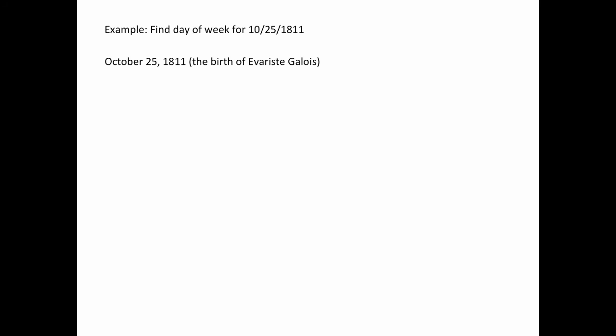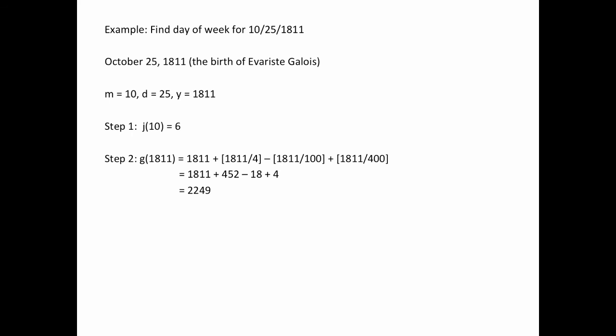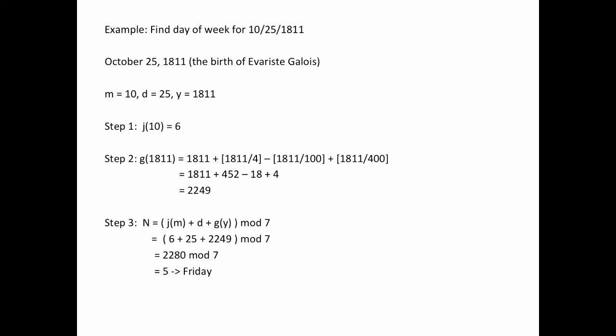Let's do another example. October 25th, 1811 — the birth of Evariste Galois. That's month 10, day 25, year 1811. Look up J for 10 and you get 6. Now calculate G for 1811. We're doing October, so we don't have to subtract one for the year, since we've already picked up any leap years in that year. So 1811 gives one day for every year, one day for every leap year, minus 18 days for each of those century years, but put back 4 because there were 4 times we had a year divisible by 400. Add the 6, the 25, and the 2249 together, divide by 7, you get a remainder of 5, and that means Friday. So Evariste Galois, born October 25, 1811, was born on a Friday.